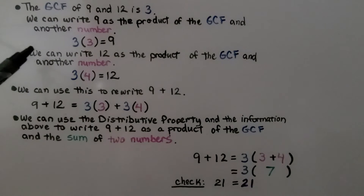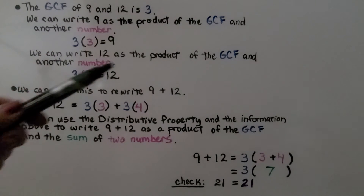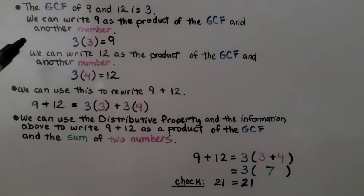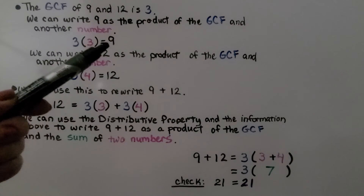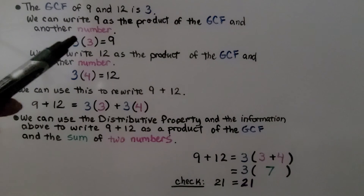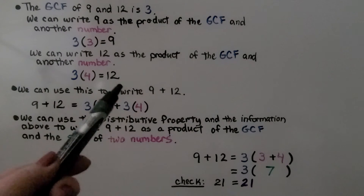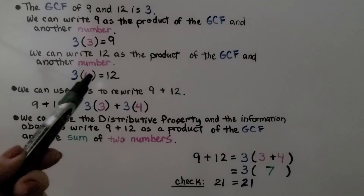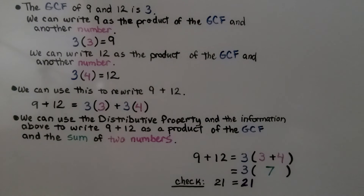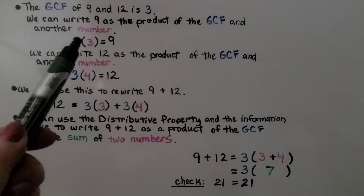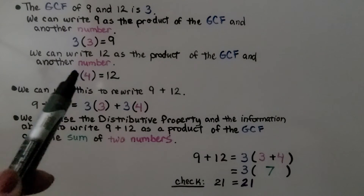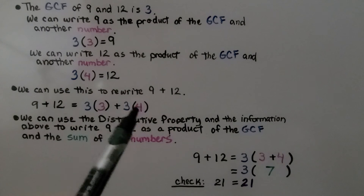The GCF of 9 and 12 is 3. We can write 9 as the product of the GCF and another number: 3 times 3. And 12 as the product of the GCF and another number: 3 times 4. We can use this to rewrite 9 plus 12 as 3 times 3 plus 3 times 4 — that's the 9, and that's the 12.